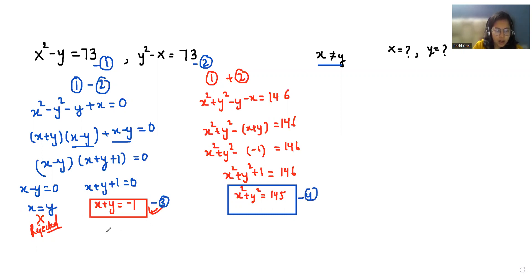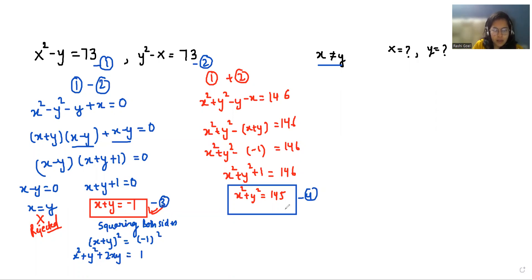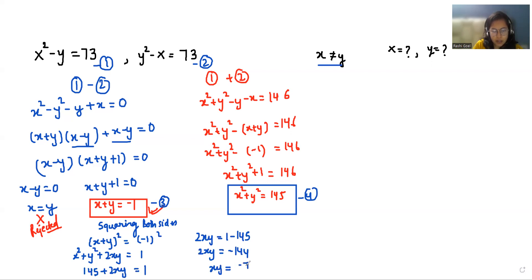Now in equation number 3, I'm going to square both sides. So (x plus y) squared gives x squared plus 2xy plus y squared equals 1. From this, the value of 2xy equals 1 minus 145, so 2xy equals minus 144, and the value of xy is minus 72.